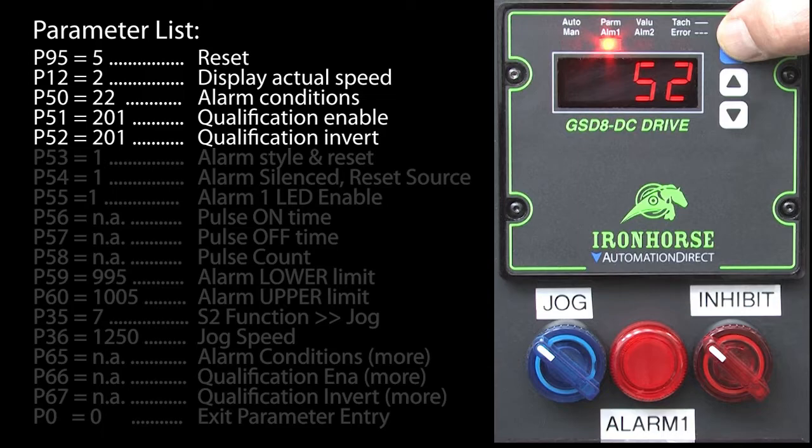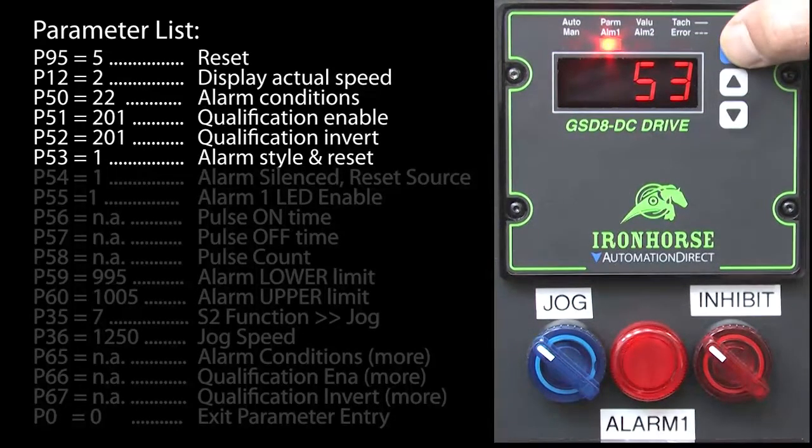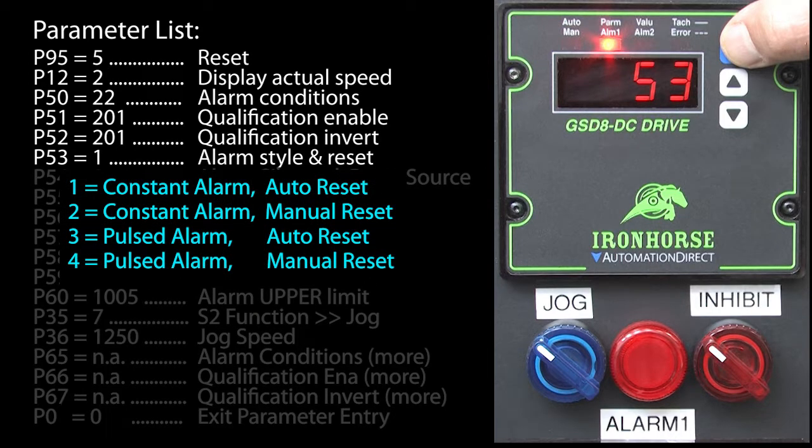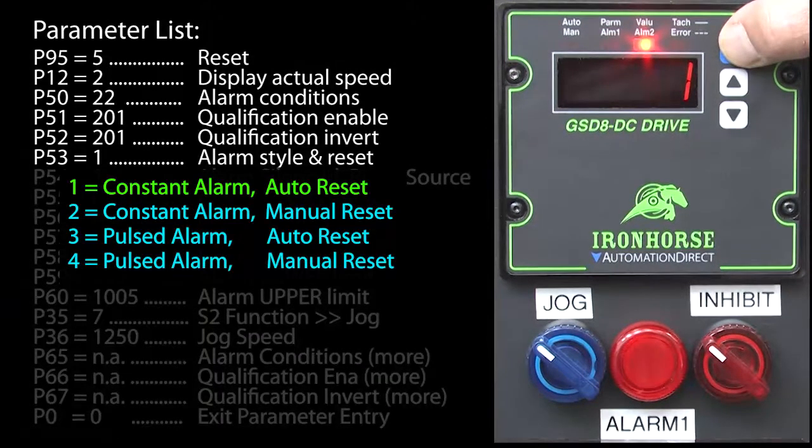If you want to alarm if something is active, then don't invert that one, which means you just don't add his number to the sum for the invert parameter. Parameter 53 is the style in reset mode. Let's start with just a constant alarm and have it automatically reset when the alarm condition goes away. Which is the default so we are good to go here.